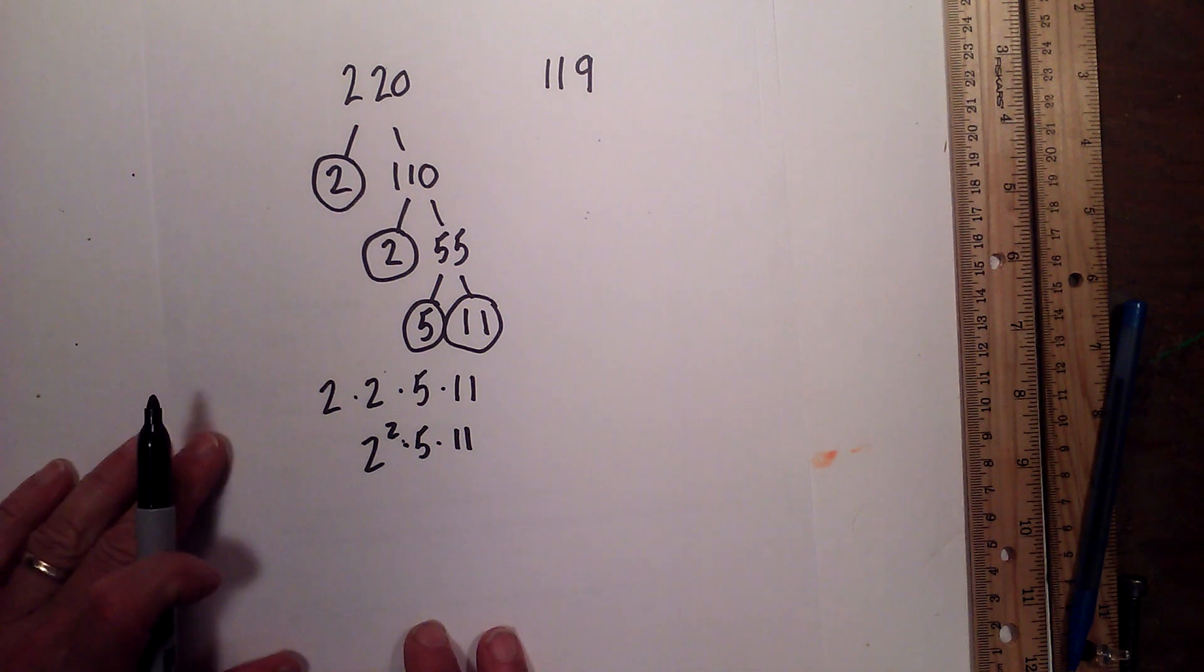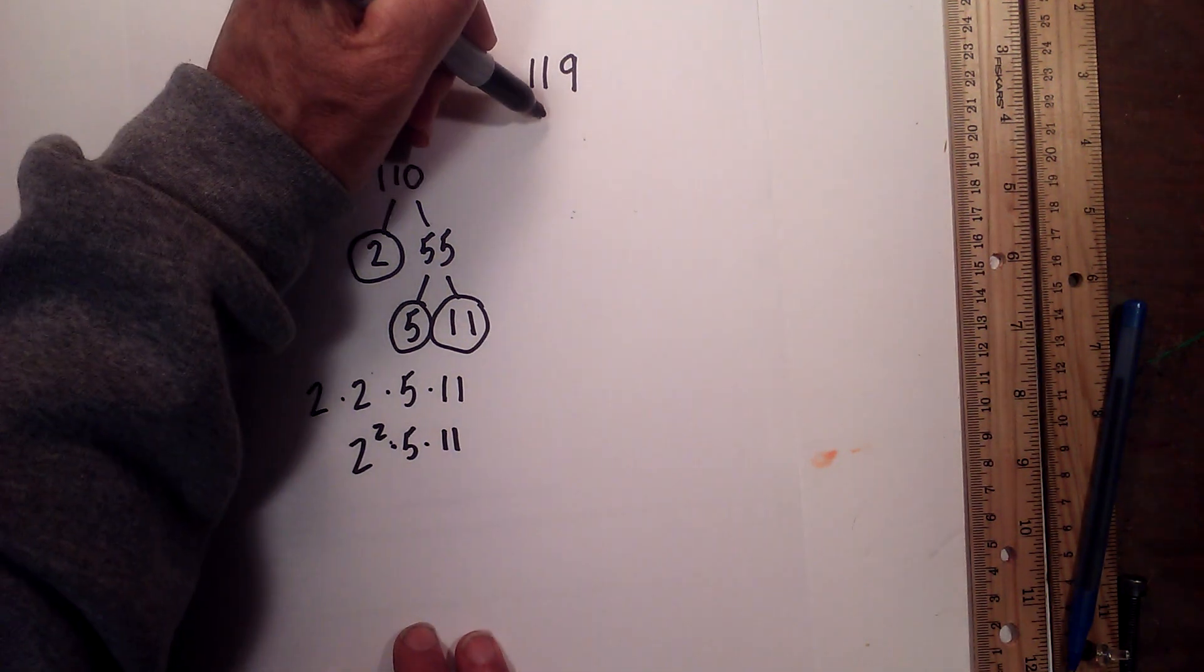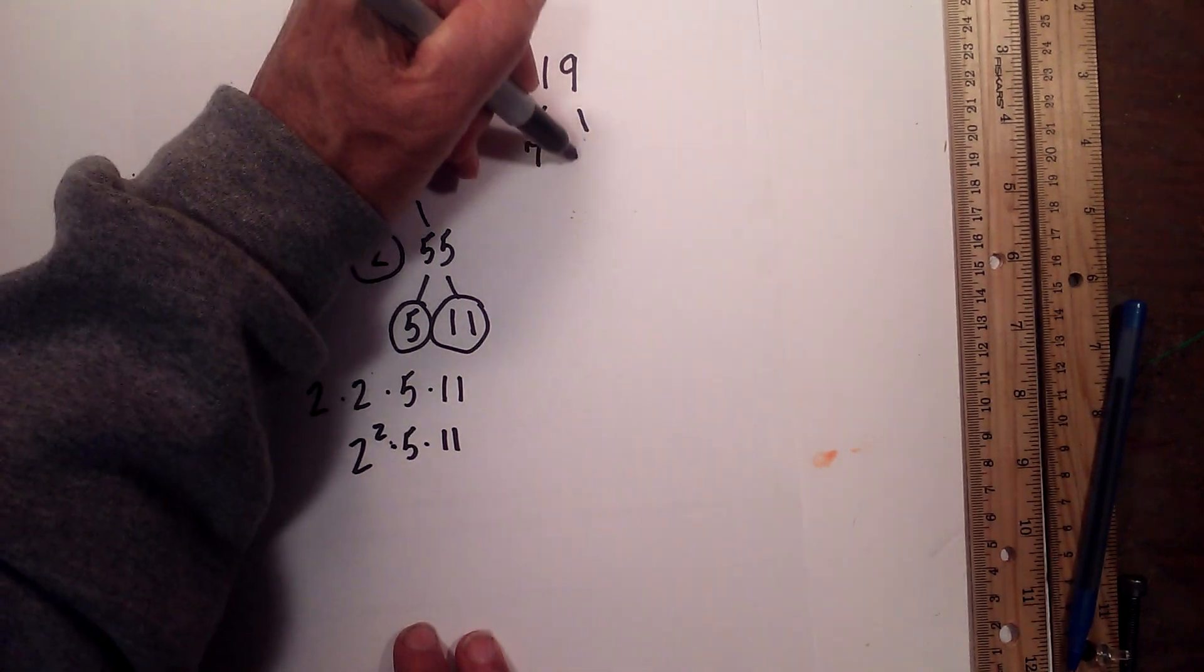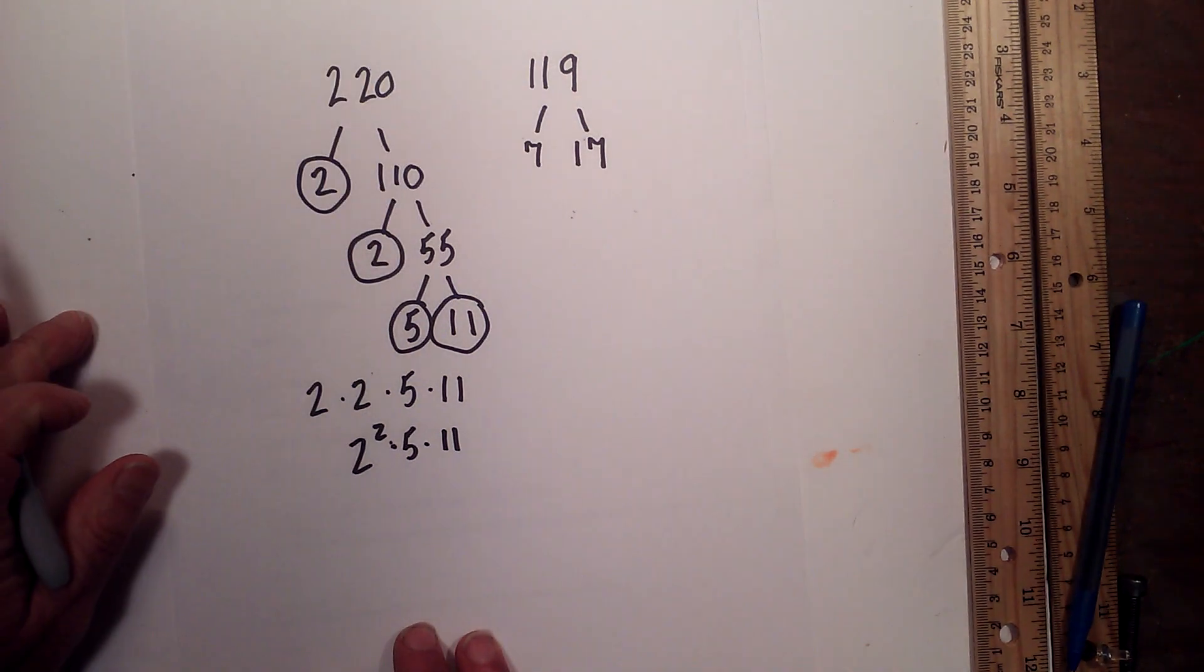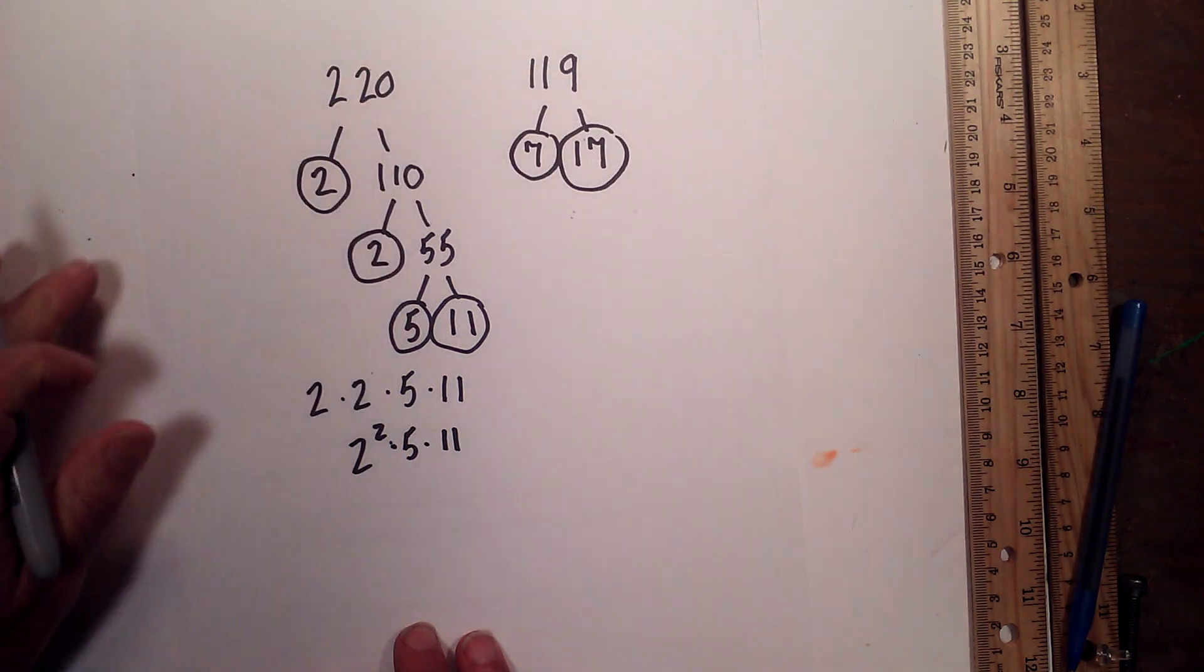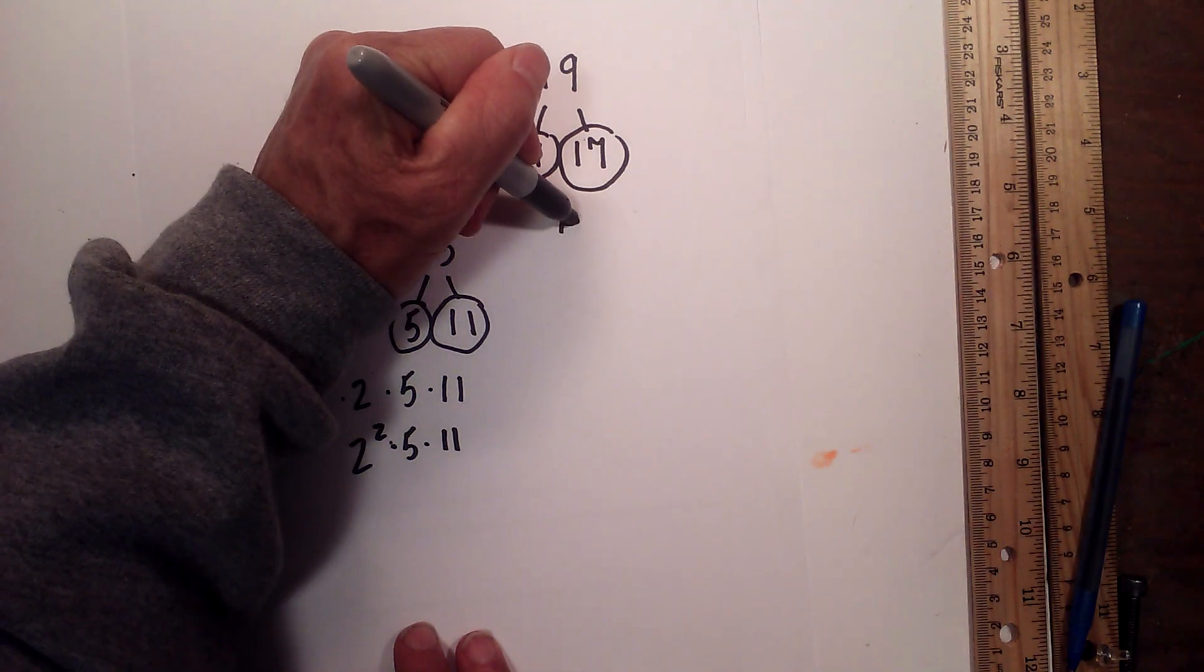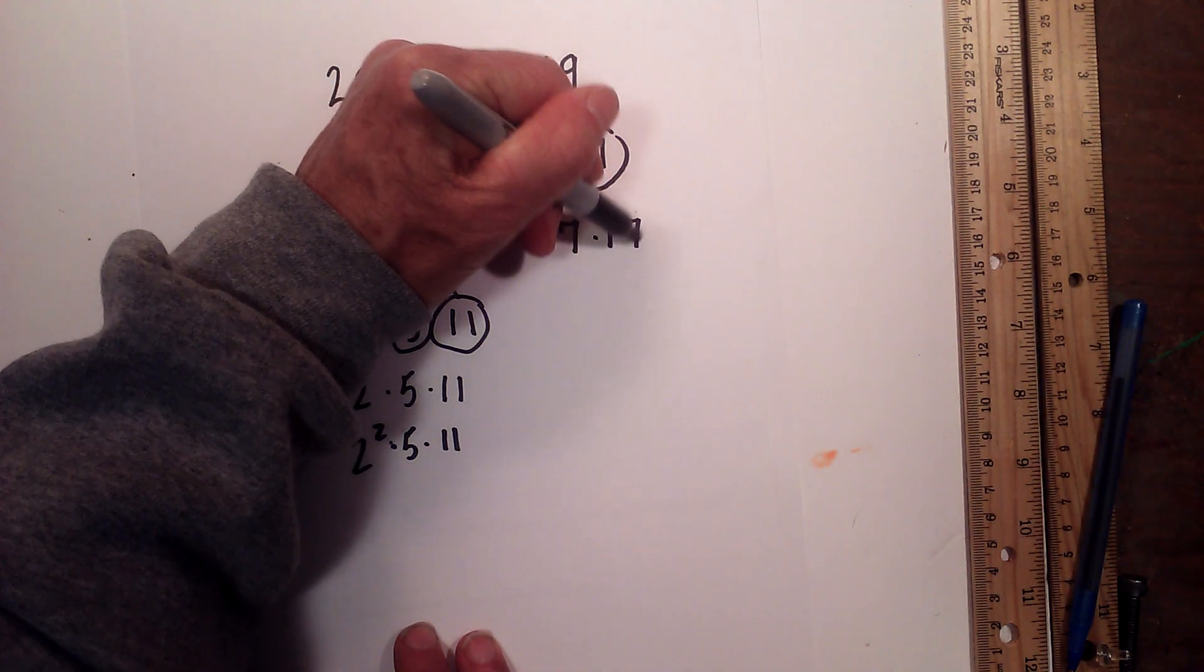Now let's look at 119 and it won't take long. 7 times 17 equals 119. They are the only numbers that will divide into it, but I will circle them because they are both prime. So the prime factors of 119 are 7 times 17.